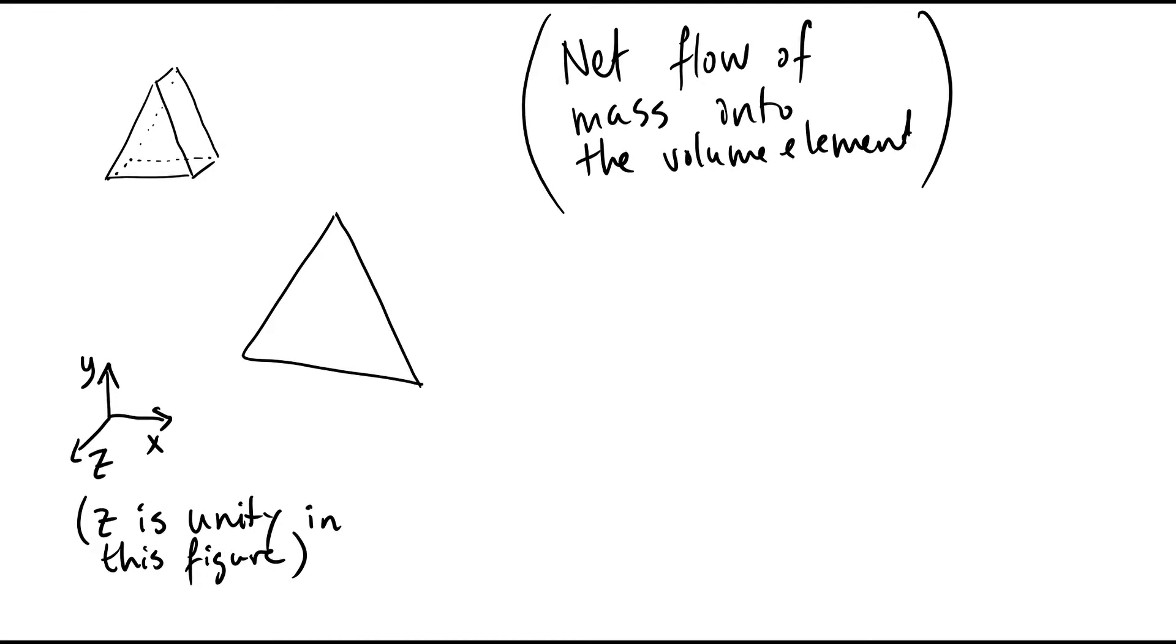To find the net flow of mass into the fluid element, we start by giving the expression for mass flow, which is the fluid density times the fluid velocity times the surface area through which the fluid flows.